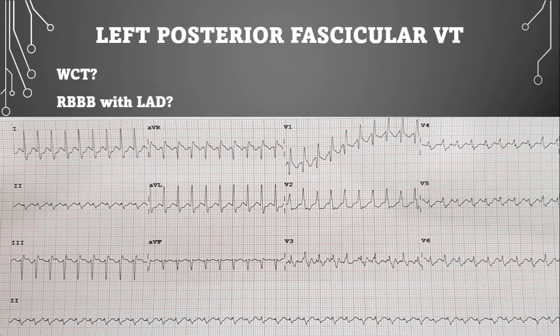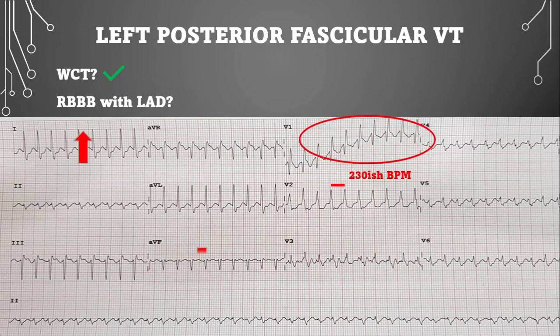Next, left posterior fascicular VTAC. Is this a monomorphic regular wide complex tachycardia? It looks monomorphic across the entire strip with a rate around 230 bpm — yes. Is there a right bundle branch morphology with left axis deviation? Yes — RSR' in V1, lead 1 is up, AVF is down. Thumbs have left each other: left axis deviation.